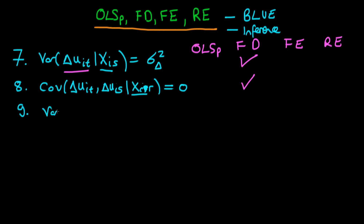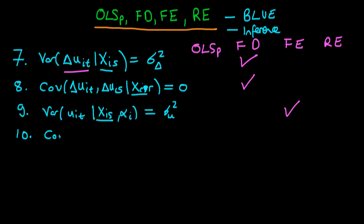The ninth assumption is that the variance of u_it, the idiosyncratic error, given our vector of independent variables for individual i at some other time period S and our unobserved heterogeneity term, has to be a constant — sigma mu squared. This is a requirement for the fixed effects estimator to be BLUE. Finally, we require that the covariance of u_it with u_is, given our vector of independent variables at time period R and our unobserved heterogeneity, has to be equal to zero. This is the final requirement for fixed effects estimators to be BLUE.